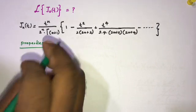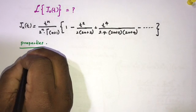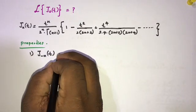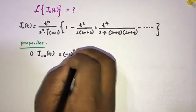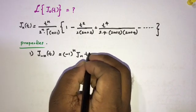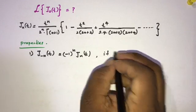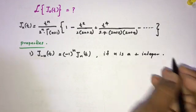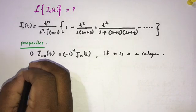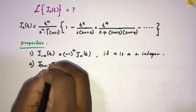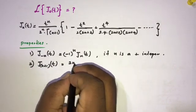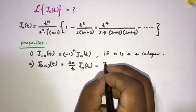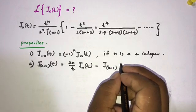Now there are some important properties of the Bessel function. First: J_{-n}(t) = (-1)^n · J_n(t), where n is a positive integer. Second: J_{n+1}(t) = (2n/t) · J_n(t) minus J_{n-1}(t).